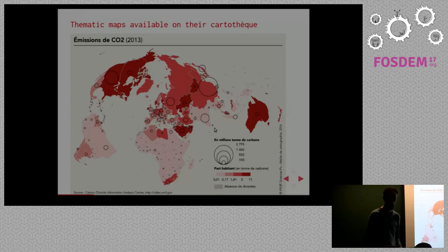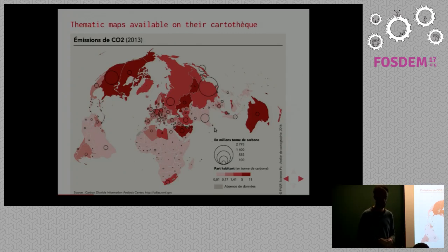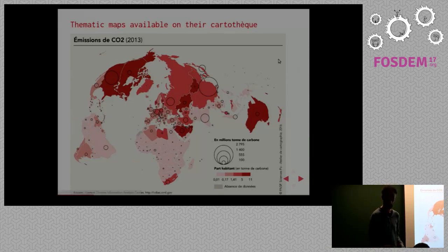Thematic maps are maps that look like this — the kind you might have stumbled upon during your school years, when opening a geographical history book. For instance, this map represents the world's carbon dioxide emissions in 2013 using two different visual forms: the color of country areas representing per-capita emissions, and circular forms representing the total amounts of emissions. If you want to see more of their work from Atelier Cartographie, they have a Cartotech website where they publish all their productions online under a Creative Commons license.